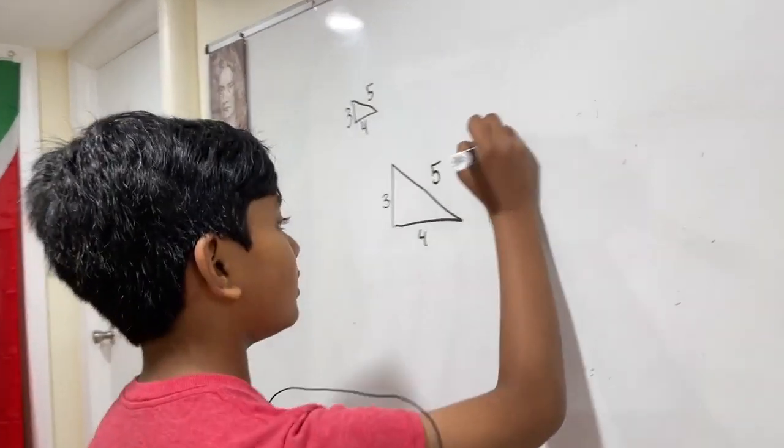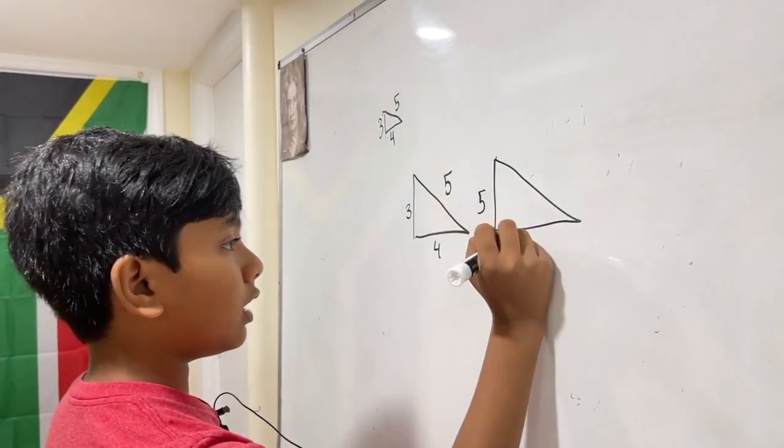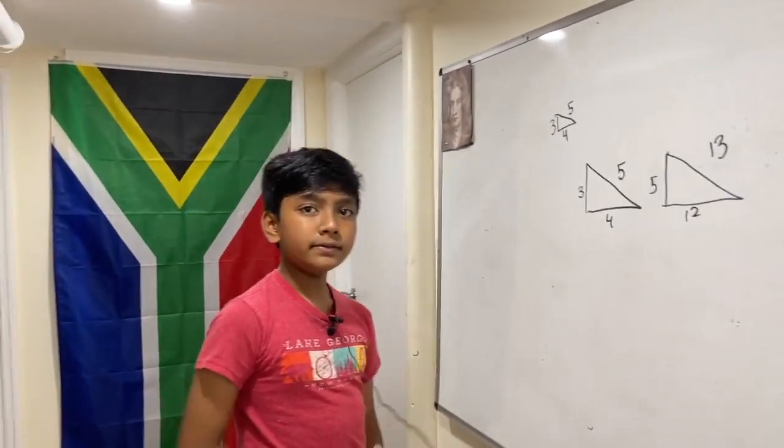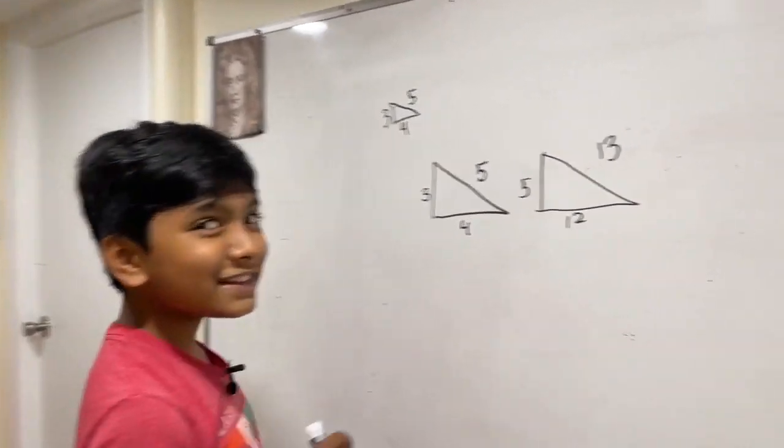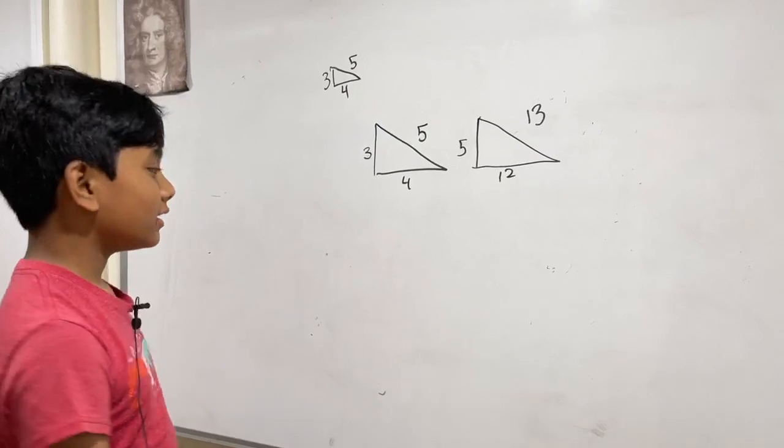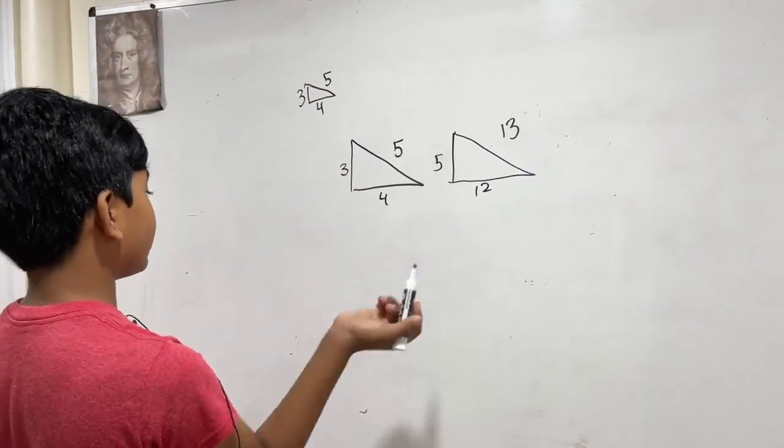There is also a slightly bigger one, 5, 12, 13. I just found my own way to calculate the next type of Pythagorean triples.